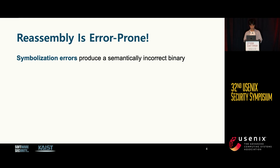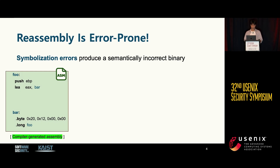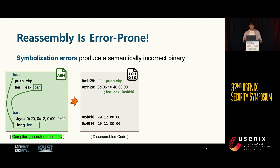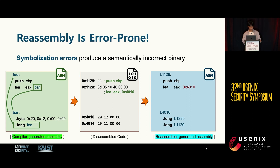Symbolization, the key technique of reassembly, is difficult, and errors can produce semantically incorrect binaries. Here I'm presenting an example of symbolization. On the left-hand side, we have compiler-generated assembly code with two symbolic labels, foo and bar. In the middle, we see the corresponding binary code. On the right-hand side, we have reassembler-generated assembly code. Symbolization is the process of recovering cross-references with symbolic labels from the binary. Errors cause invalid memory references and data corruption, producing a semantically incorrect binary.